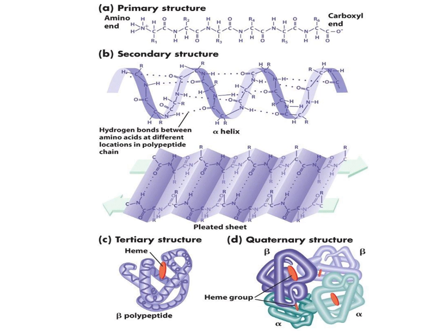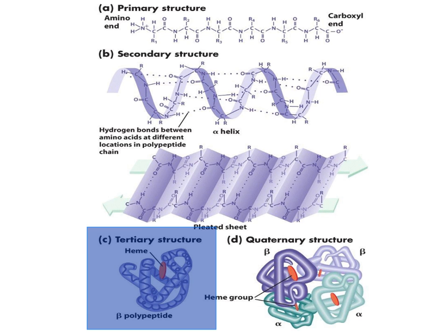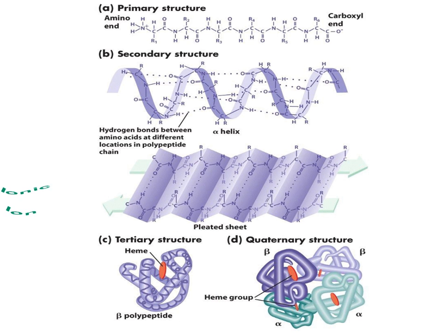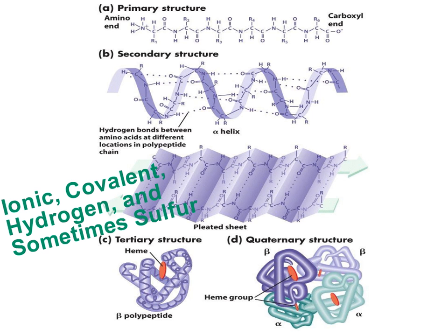As a protein molecule continues to get larger, the secondary structures begin to bend and fold on themselves and form the tertiary level of protein structure. This structure is actually referred to as globular and there are four types of bonds involved in holding the amino acids together in this globular structure: ionic, covalent, hydrogen, and sometimes sulfur bonds.